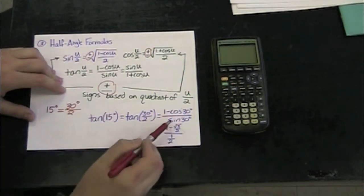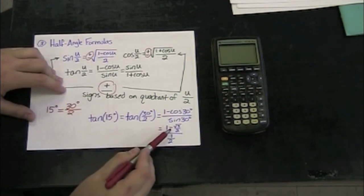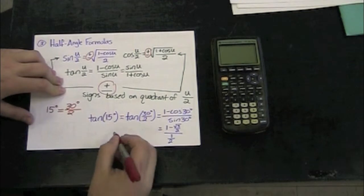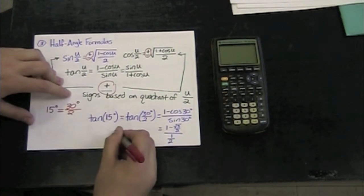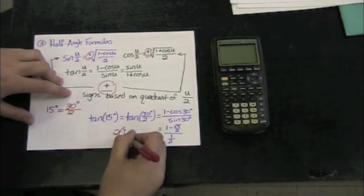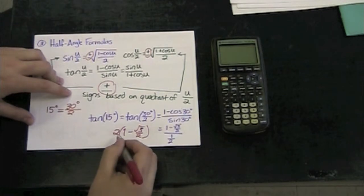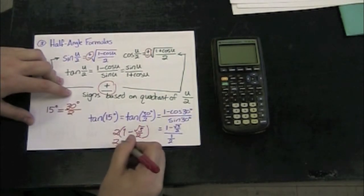If I evaluate cosine of 30 and sine of 30, I get 1 minus the square root of 3 over 2 divided by 1 half. Dividing by 1 half is the same thing as multiplying by 2. And I've got 1 minus the square root of 3 over 2 all times 2, which I could rewrite as 2 minus the square root of 3.